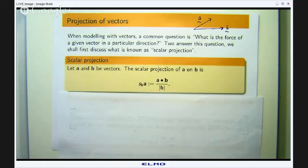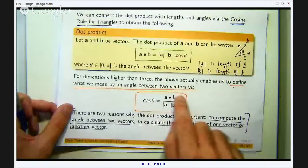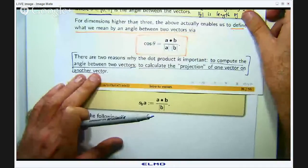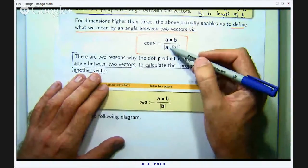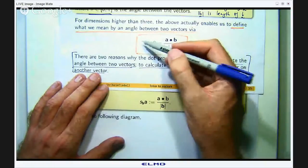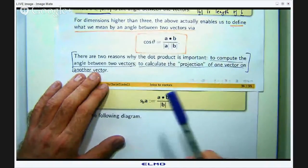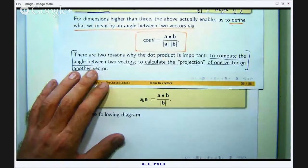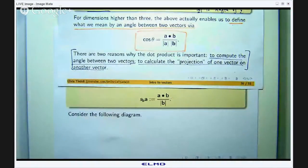That might seem strange, but from a previous formula we can basically get this. If we take the length of a to the other side then this and this will be the same. So basically what this scalar projection is: it is the length of the vector a times the cosine of the angle between the two vectors.